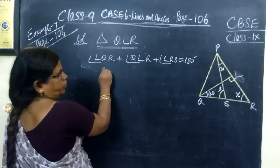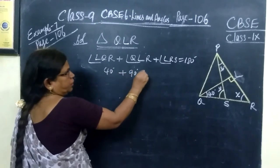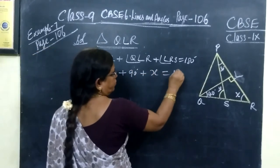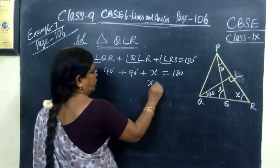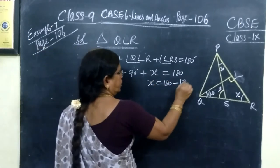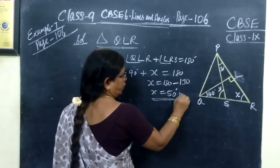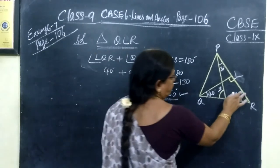What is angle LQR? This is 40, then 90, then this is x. So 40 plus 90 plus x equals 180. Therefore, x equals 180 minus 130, so x equals 50 degrees. One part is complete.